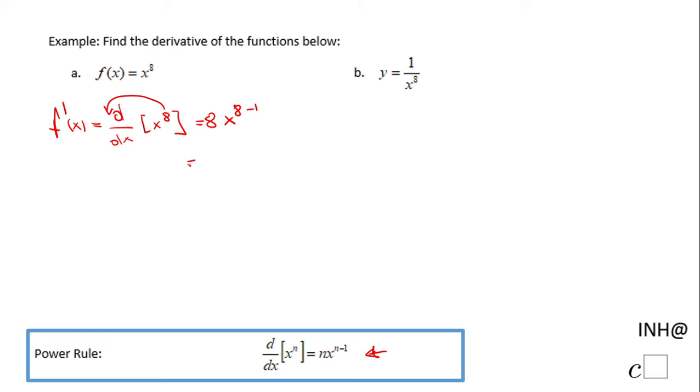The final form will be 8x to the 7th. This is the derivative of f of x equals x to the 8th. What about the second one?